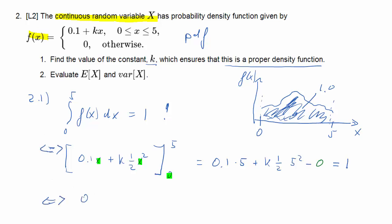So we can simplify that. That's 0.5 plus k times 25 over 2 should be equal to 1. And we can solve this for k, jumping a couple of steps, but that will be 1 over 25. So k should be 1 over 25.